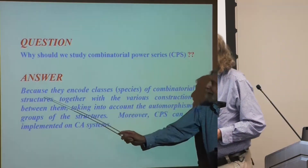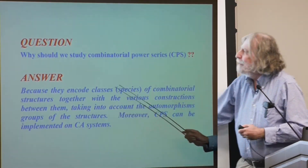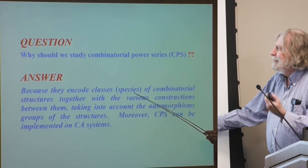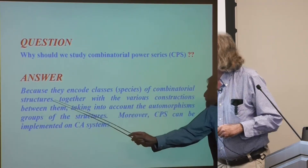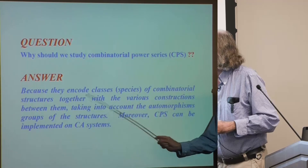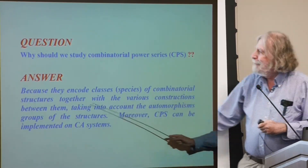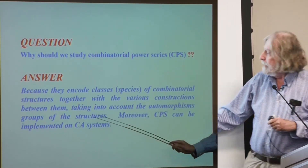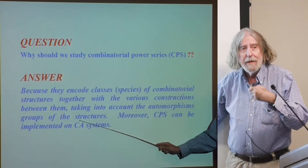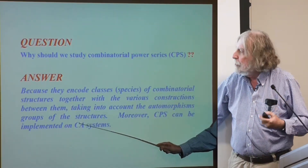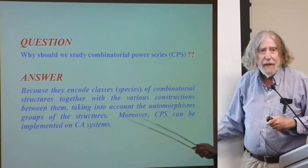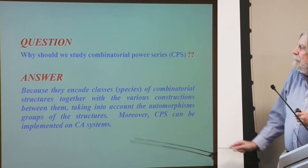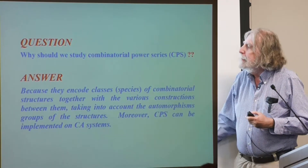These inclusions are compatible with the operations. Why should we study combinatorial power series, CPS for short? The answer is that they encode classes — more specifically species — of combinatorial structures, together with the various constructions between them, taking into account the automorphism group or the stabilizer groups of the structures. And it can be implemented on computer algebra systems.